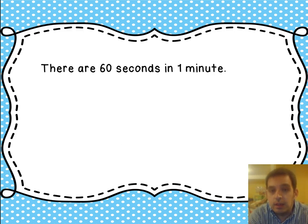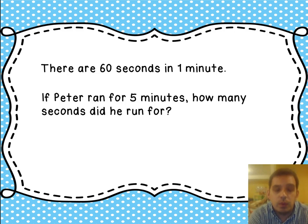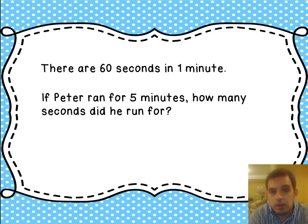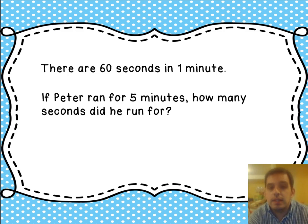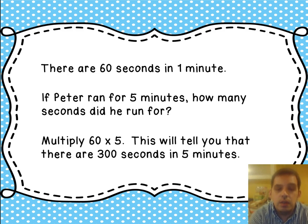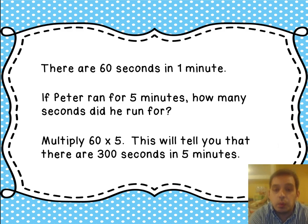There are 60 seconds in 1 minute. Here's a problem for you: if Peter ran for 5 minutes, how many seconds did he run for? You're going to take 60 seconds and figure out how many seconds are in 5 minutes. To do that, we multiply 60 — 60 seconds in a minute — times 5, for 5 minutes. That tells you there are 300 seconds in 5 minutes.